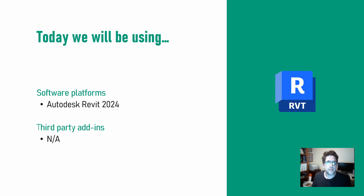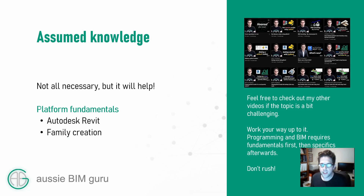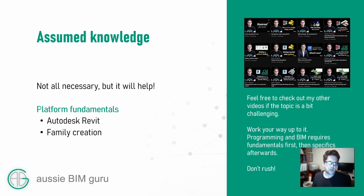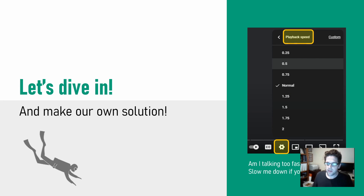Today I'll be using Autodesk Revit 2024. If you're using 2025 you can actually use more intelligent arrays that can go down to zero, but today I'm going to show you how to protect your arrays from breaking using some formulas. I'll assume you've got a little bit of knowledge in Revit and in family creation at a fundamental level, but I'll try to explain what I'm doing as I go.